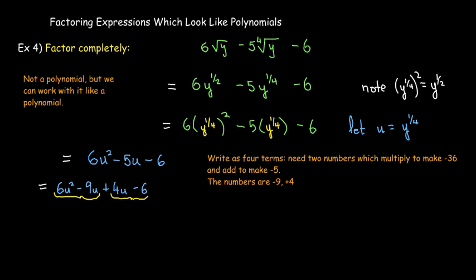I'll group them, the first two together, the second two together. Common factor in the first two is 3u. Common factor in the second two is 2. So one binomial is 2u minus 3. The other one will be 3u plus 2.